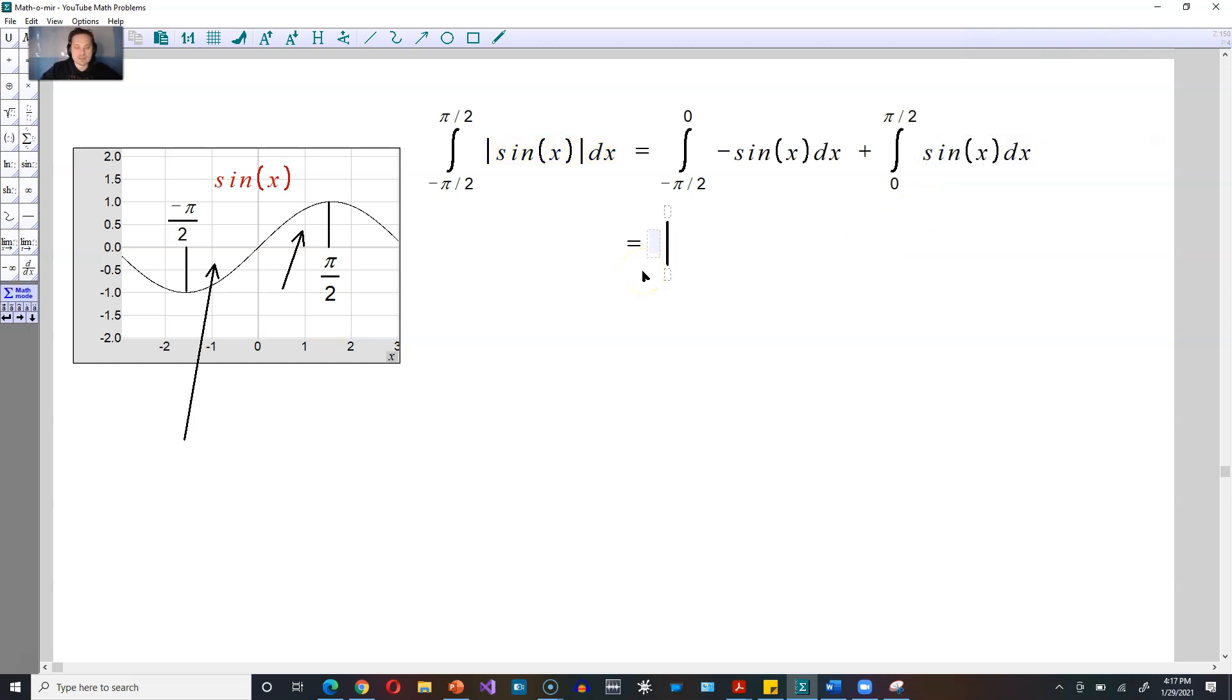When you have to integrate, you're asking what's the function whose derivative is negative sine? That's the cosine function. So you're going to say cosine of x with your upper limit of 0 and your lower limit of negative π/2. For the second piece, what's the function whose derivative is the sine function? That is negative cosine. Negative cosine x, and this will go between π/2 as the upper limit and 0 as the lower limit.